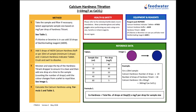Today we are going to demonstrate a field test method for measurement of calcium hardness in water samples. This is a titration method and the reference code for this method sheet, should you need to request it, is FTM14 or Reagent Pack 5. This method can measure calcium hardness levels of greater than 10 mg per litre.